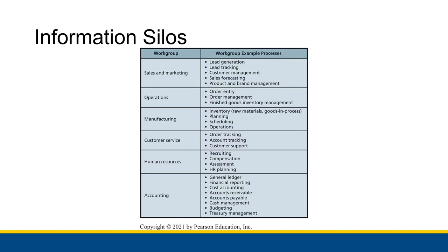Now we talked about this example work group and worker processes diagram before, and if you look through all of the example processes in every single work group right here — and I'll give you a second if you want to pause and refresh yourself over what these different processes are — what you might notice is that all of these processes, or at least all of these work groups, in some way use customer data. So all of these work groups would benefit from having a shared database of customer data, or sales data, or all that kind of stuff.